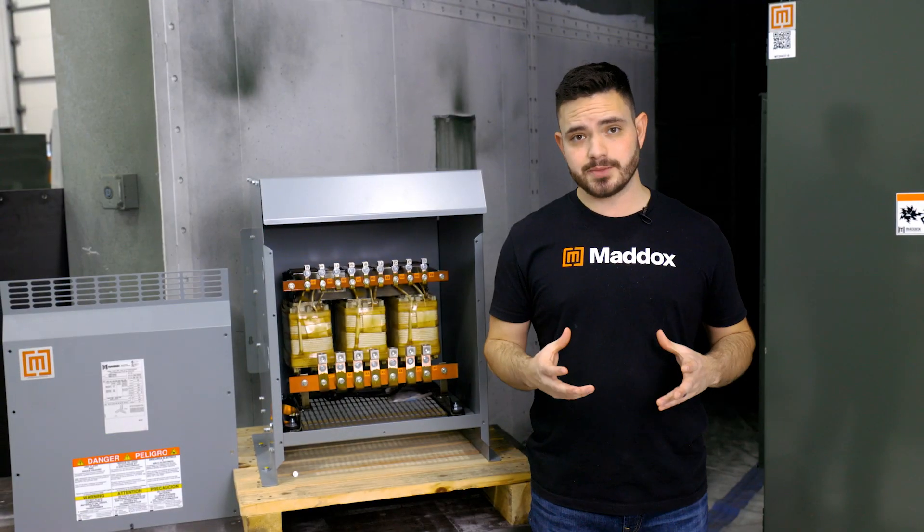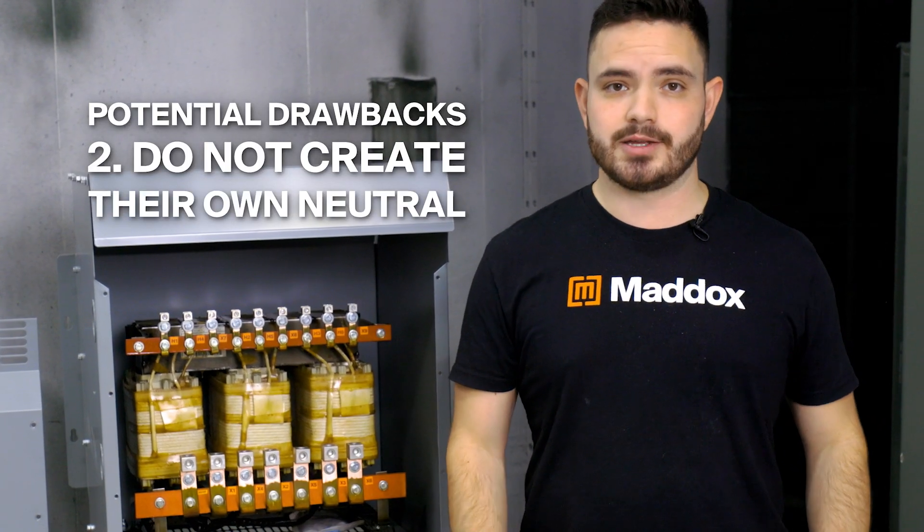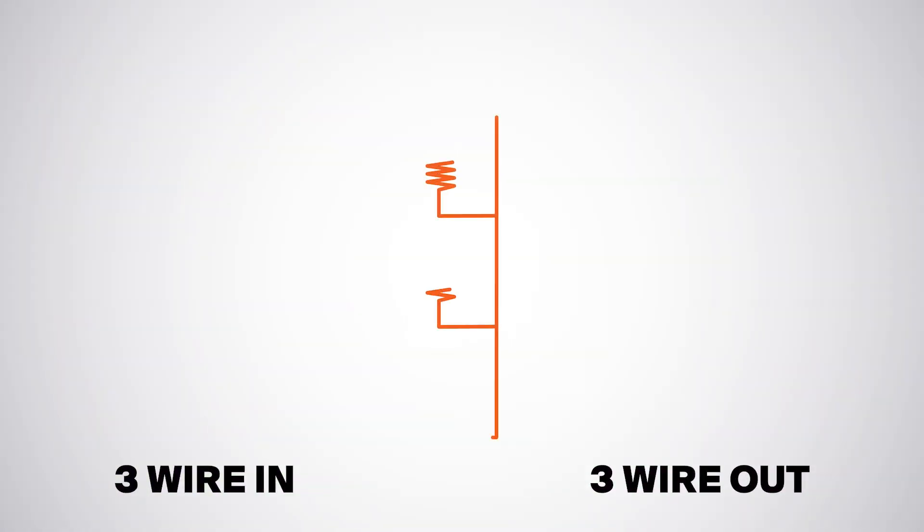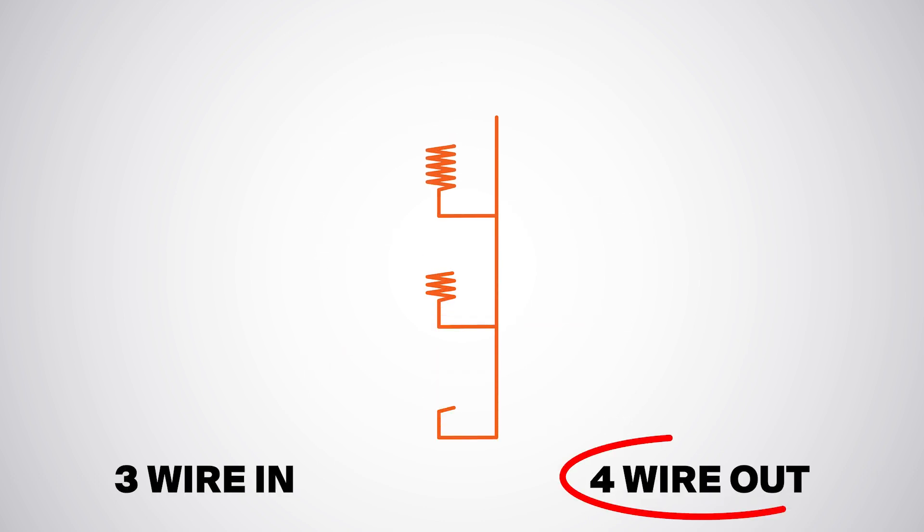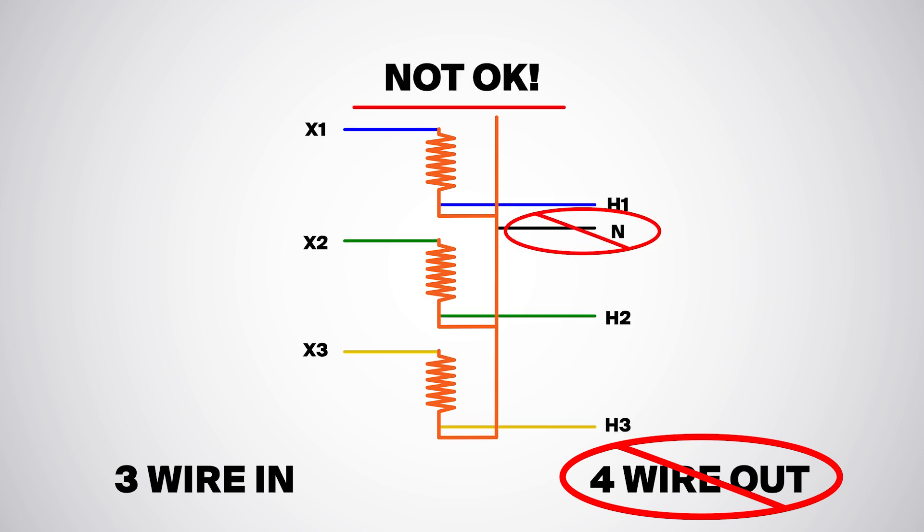Because of the lack of isolation, auto transformers do not create their own neutral. So that means three wires in, three wires out is okay. Four wires in, four wires out also okay. Four wires in, three wires out works just fine. But three wires in, four wires out does not work.